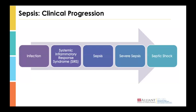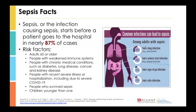Here are some important facts about sepsis. At least 1.7 million adults in the United States develop sepsis yearly, and about 350,000 adults die from sepsis during their hospitalization or even in hospice. It is important to note that sepsis or the infection causing sepsis starts before a patient goes to the hospital in nearly 87% of cases.